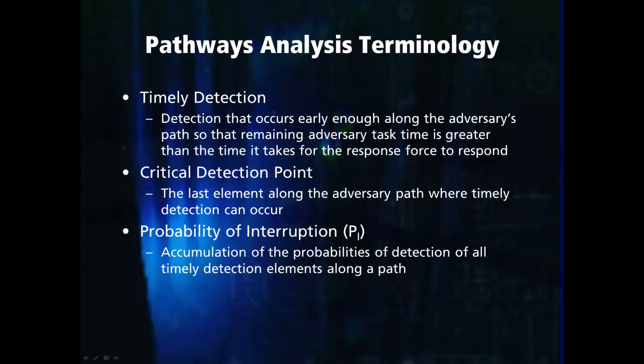Before we get into analyzing pathways, we need to define some commonly used terms. The first is timely detection, which refers to detection that occurs early enough along an adversary's path so that the remaining adversary task time is greater than the time it takes for the response force to respond. Another term is the critical detection point, which represents the last element along the adversary path where timely detection can occur. Finally, we will define the probability of interruption as the accumulation of timely detection probabilities along a path.